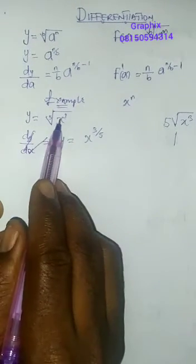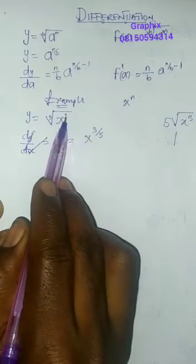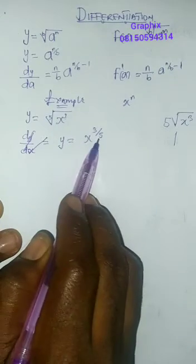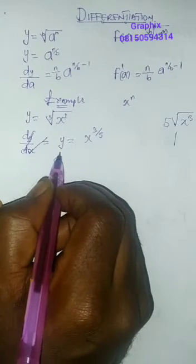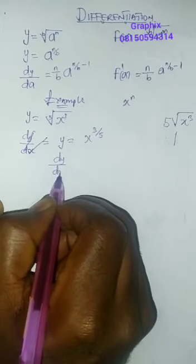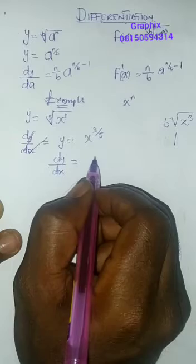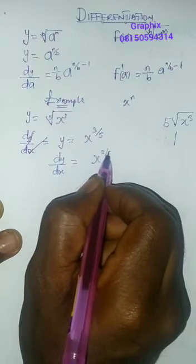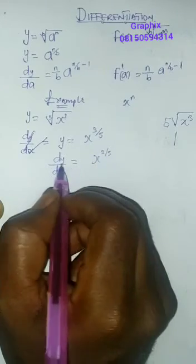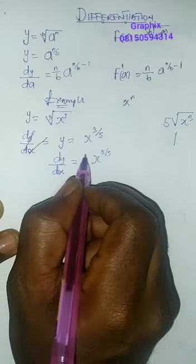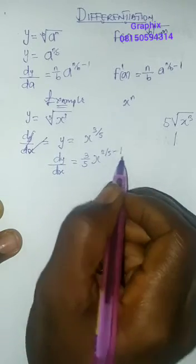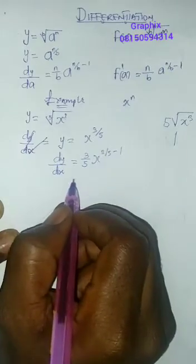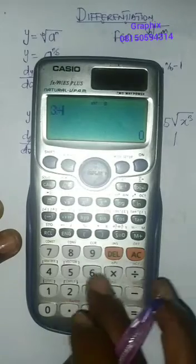Now y equals this, essentially writing it this way: whatever is up remains up, whatever is in the root sign will be under. So dy over dx will give me x³ over 5. This guy must come down, so 3 over 5 minus 1. When you do that, 3 over 5 minus 1 gives us 3 divided by 5 minus 1, that's 0.4, that is 2 over 5.